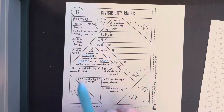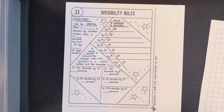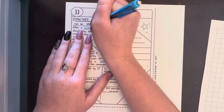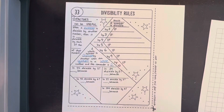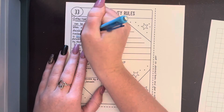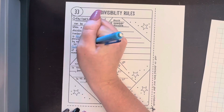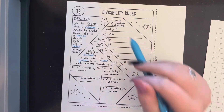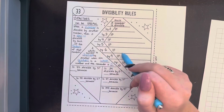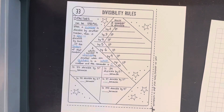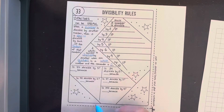Let's go back up to this top corner now — Factors. Let's remember what factors are. Factors are the numbers that make the multiplication problem. So two times three equals six; the two and the three are factors. It says factors can be useful: when a number is divisible by another number, it is also divisible by each of the factors of that number. So if it's divisible by six, then it's also divisible by its factors, which are two, three, and one.